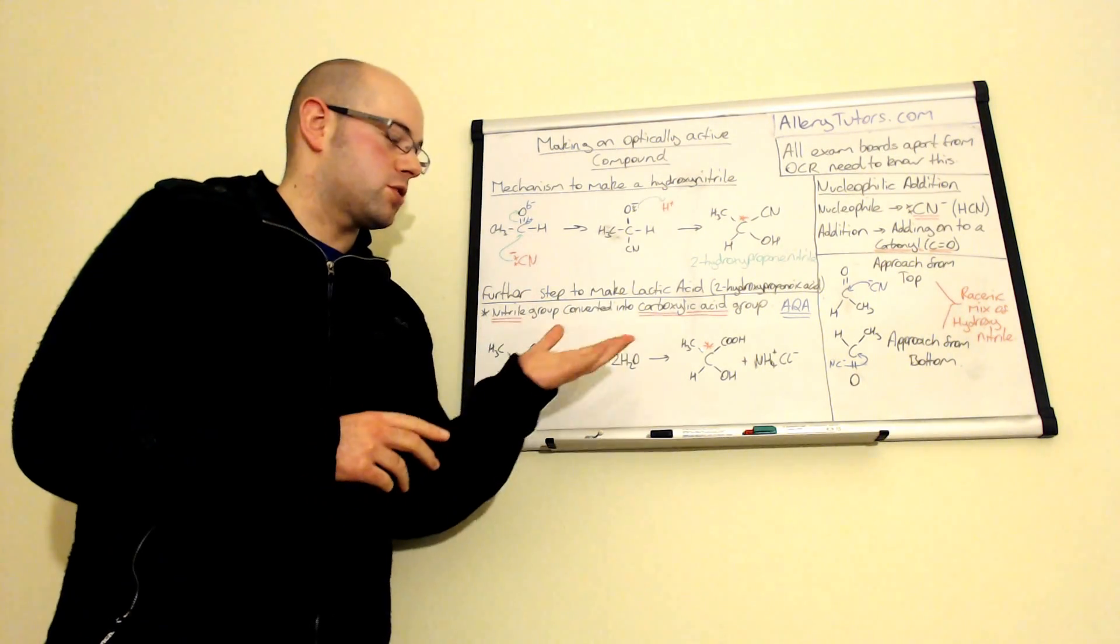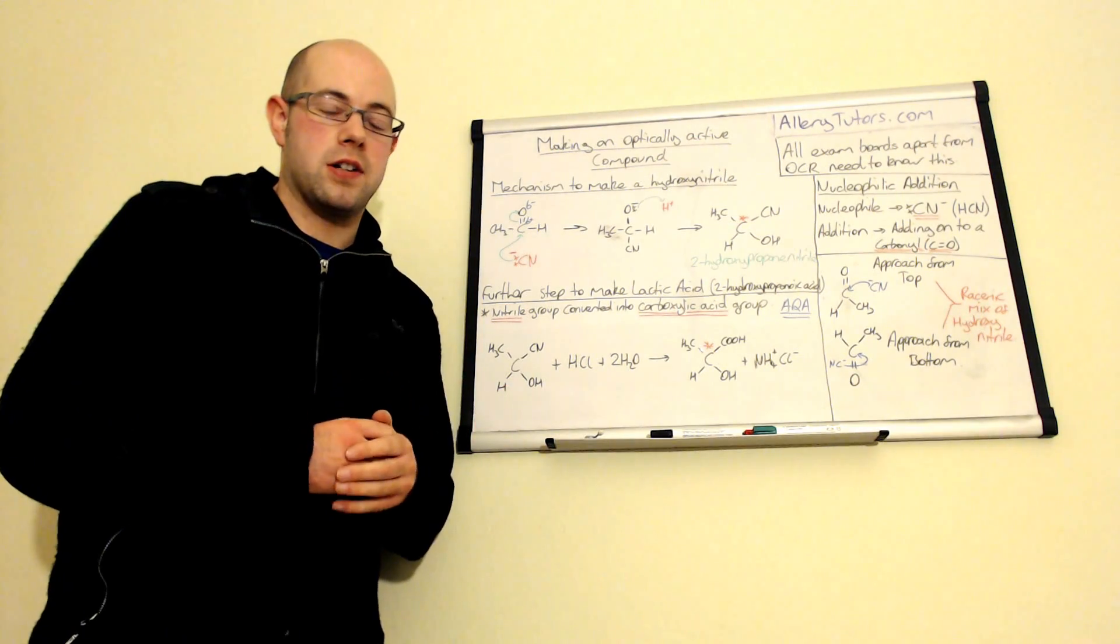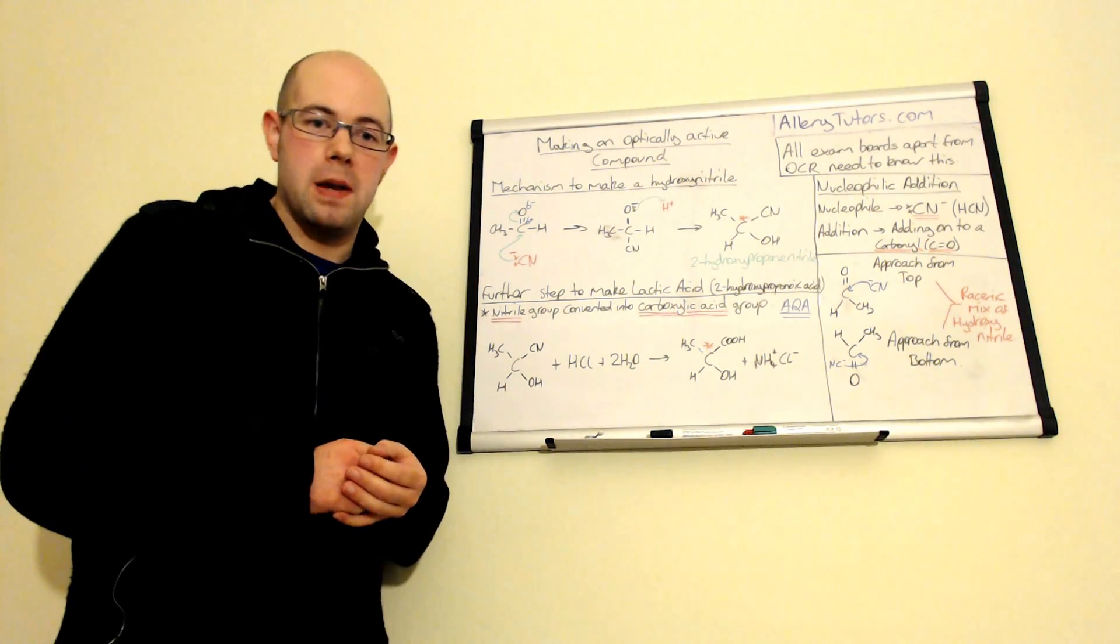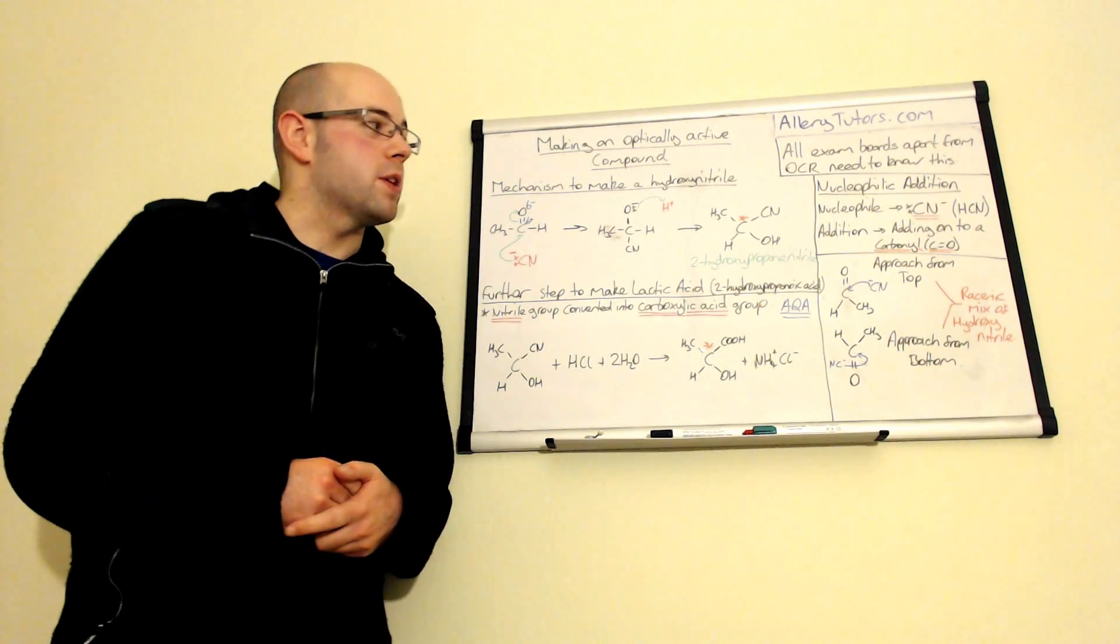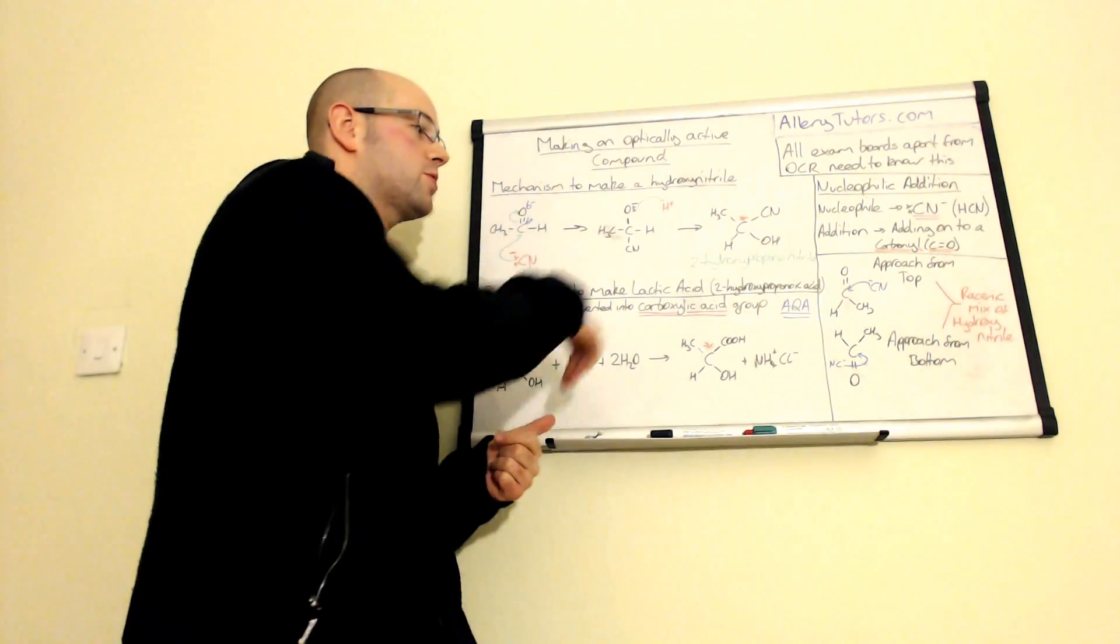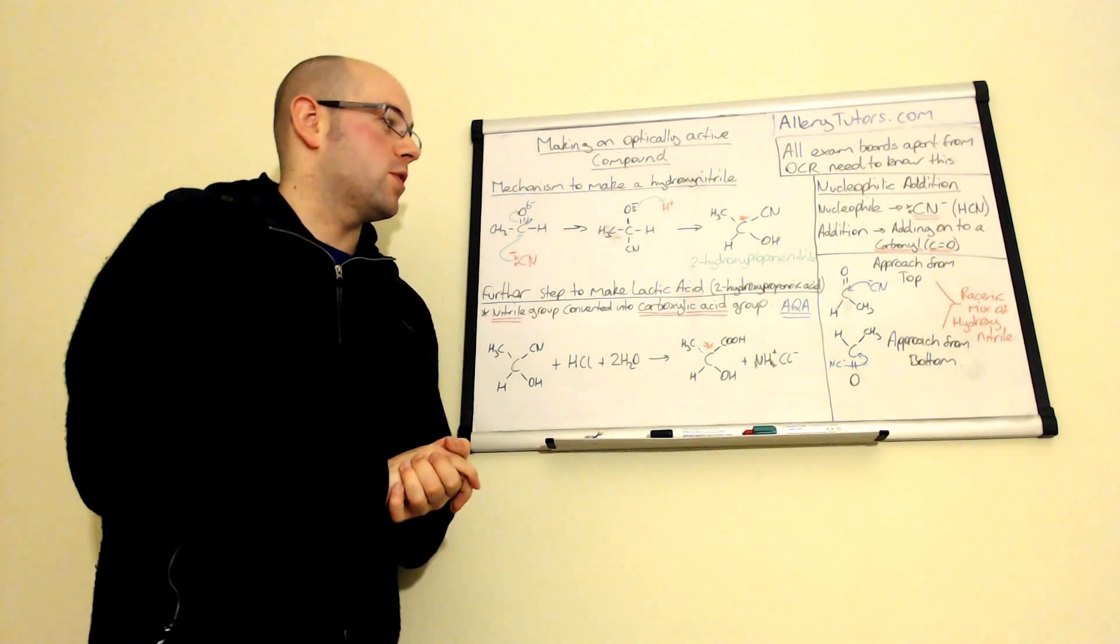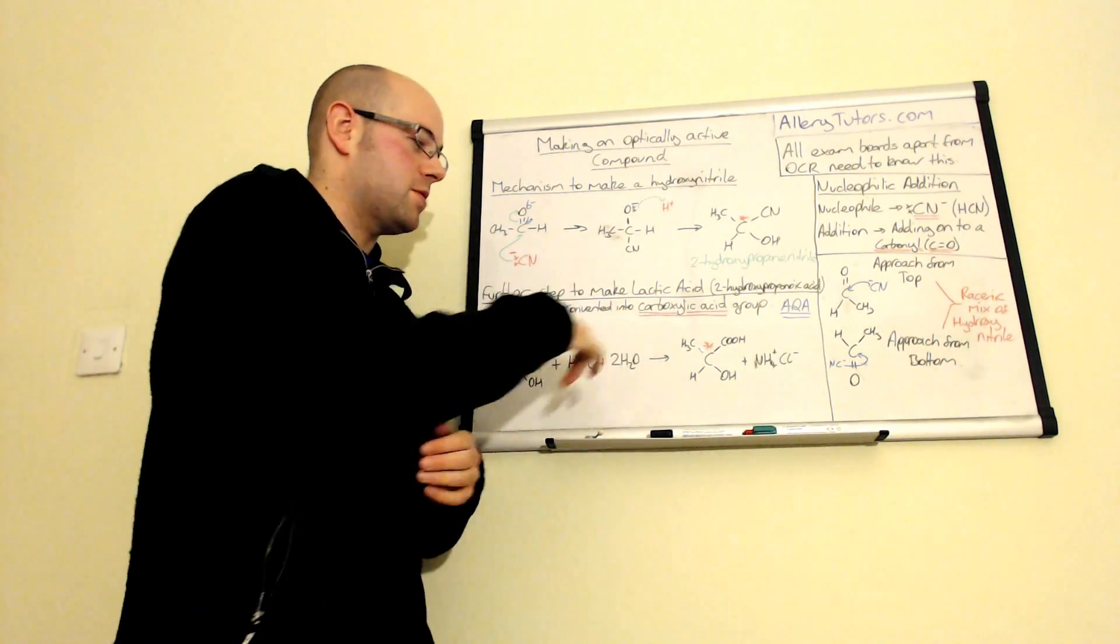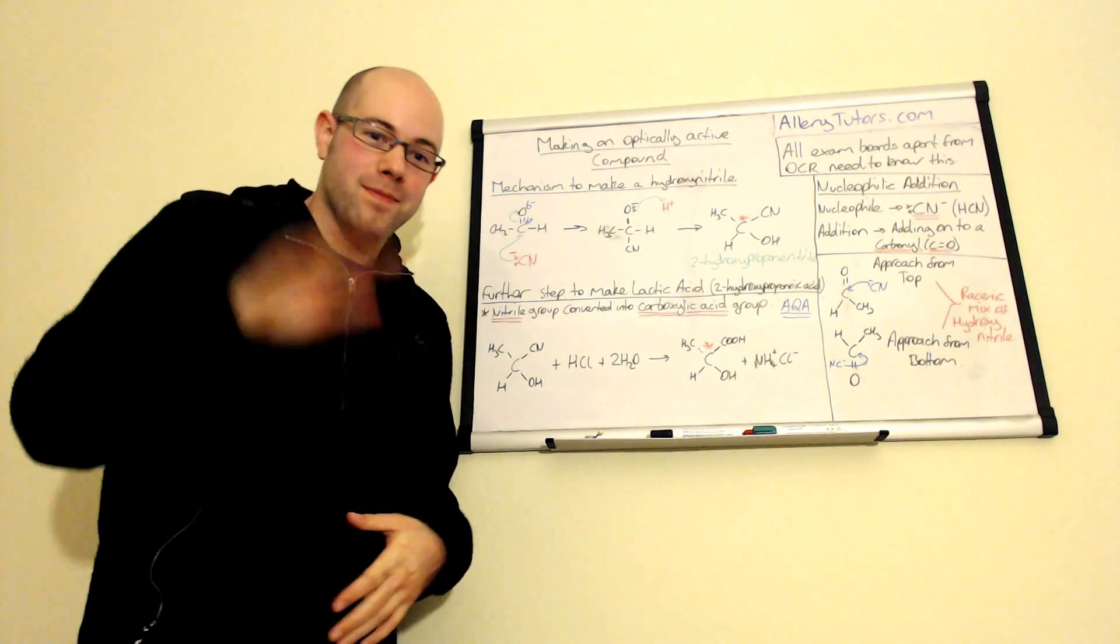So, some drugs are harmful with the other enantiomer in there, but the vast majority, actually, the other enantiomer is ineffective. And most drug companies just keep it in because it's cheaper to do. But you've got to know these mechanisms. Make sure you learn your names as well. So your hydroxynitrile. And if you're doing AQA, you need to know how to make your lactic acid as well. But hope that helps. That's it. Bye.